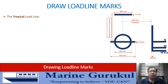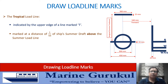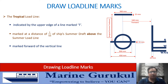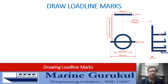The tropical load line mark is indicated by the upper edge of a line marked with the alphabet T. It is marked at the same distance as W was from S — that is, 1/48th of the summer draft — but above the summer load line, forward of the vertical line. The spacing between the upper edge of the summer mark and the upper edge of the tropical mark is the same as between the summer mark and the winter mark, which in both cases is 1/48th of the summer draft.